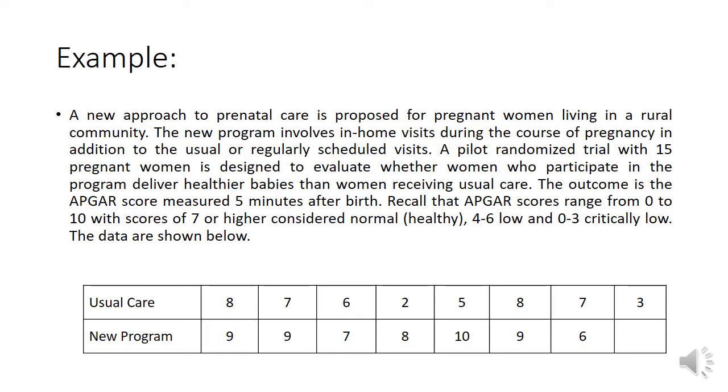A pilot randomized trial with 15 pregnant women is designed to evaluate whether women who participate in the program deliver healthier babies than women receiving usual care. The outcome is the APGAR score measured 5 minutes after birth. Recall that APGAR scores range from 0 to 10 with scores of 7 or higher considered normal or healthy, 4 to 6 low, and 0 to 3 critically low. The data are shown below. We have here the data for usual care and for the new program.